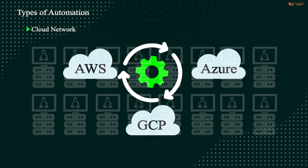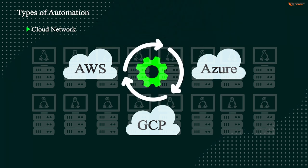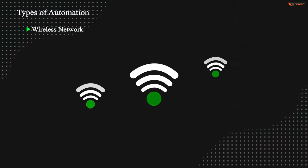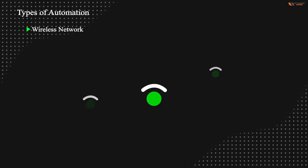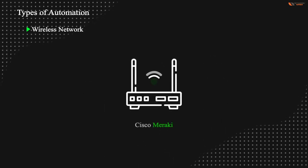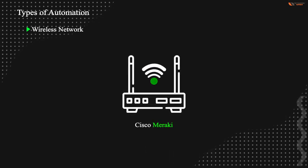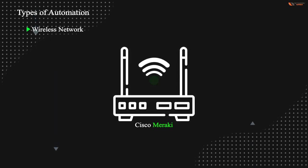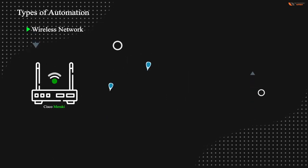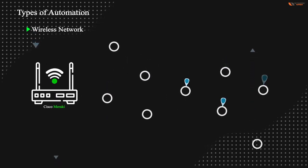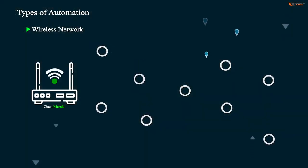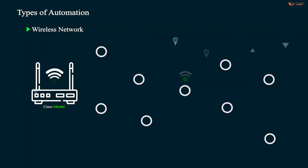Even wireless networks are getting automated now. The best example is Cisco Meraki — a solution from Cisco which has an SDN or automation solution where you can control the Wi-Fi of all locations from one place, like Delhi, Mumbai, Chennai, Kolkata, New York, Dubai. All Wi-Fi can be controlled from one place. This technology is known as Cisco Meraki.